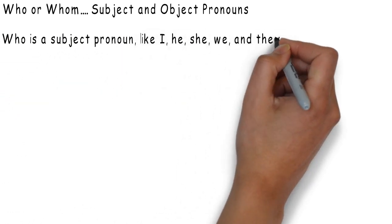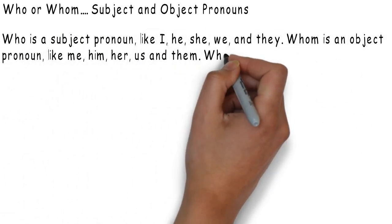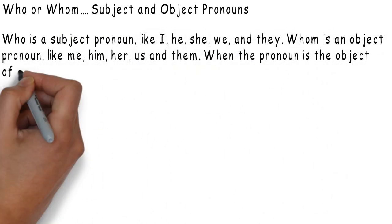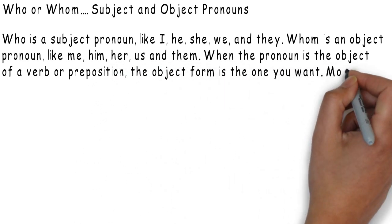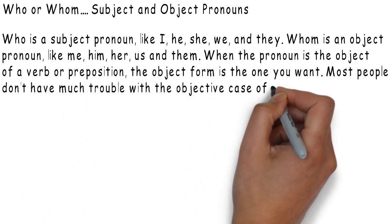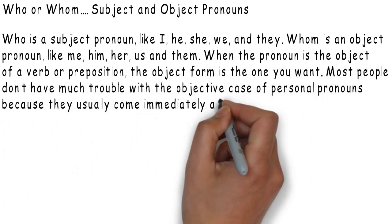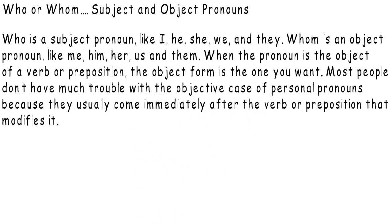Who or whom — subject and object pronouns. Who is a subject pronoun like I, he, she, we, and they. Whom is an object pronoun like me, him, her, us, or them. When the pronoun is the object of a verb or preposition, the object form is the one you want. Most people don't have much trouble with the object case of personal pronouns because they usually come immediately after the verb or preposition that modifies it.